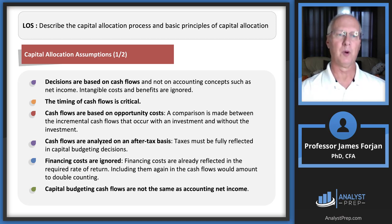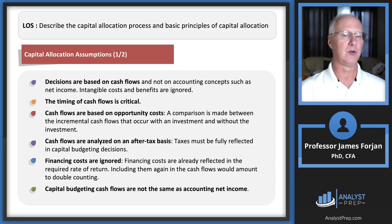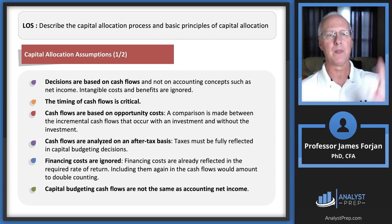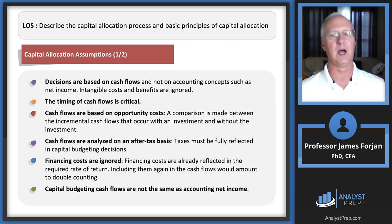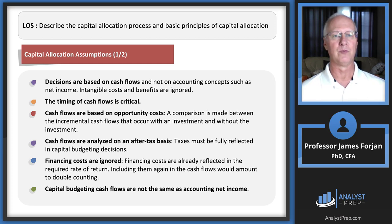Financing costs are ignored. When we estimate operating cash flows, we do not take out interest expense. The reason is that we use the yield to maturity on the bond or loan to compute the required rate of return — called the weighted average cost of capital in an upcoming reading. If we counted financing costs in both the cash flows and the required return estimate, we would be double counting them. Capital budgeting cash flows are not identical to accounting net income because of the ability of accountants to pick and choose from approved rules and regulations.